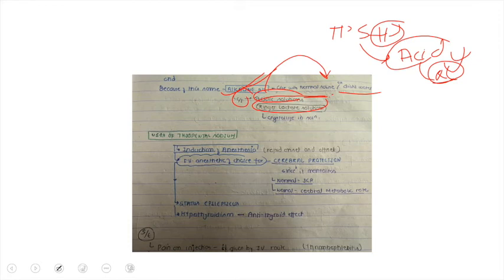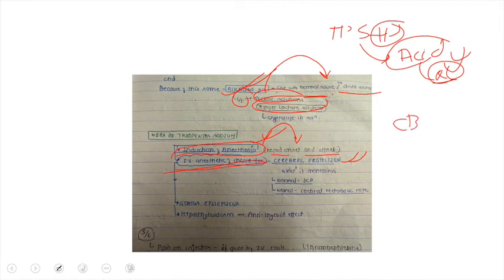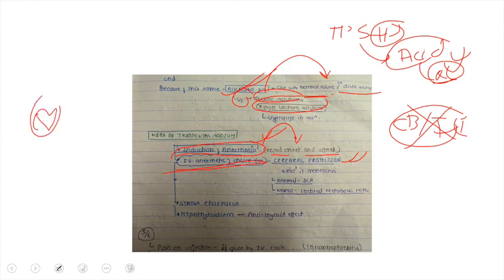The uses of thiopental sodium: it is used as a sedative and as an induction agent for anesthesia. Its major advantage is rapid onset and rapid offset of action due to its redistribution phenomenon. It is also used for cerebral protection because it reduces cerebral blood flow and cerebral metabolism, making it useful in cases where the brain needs protection.